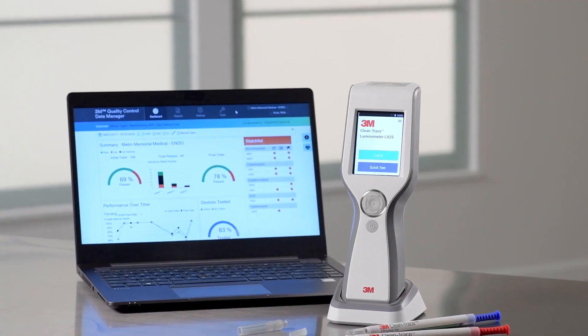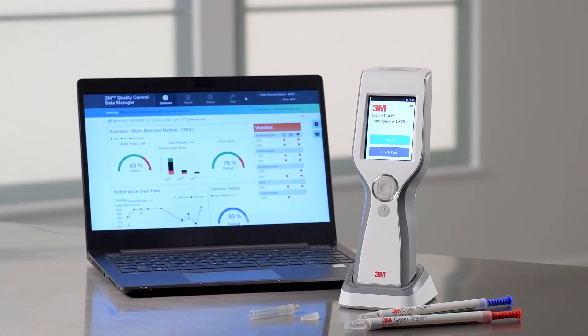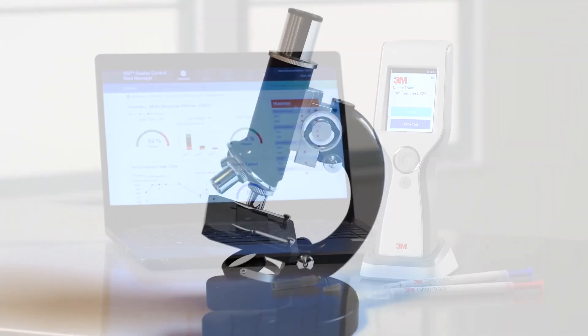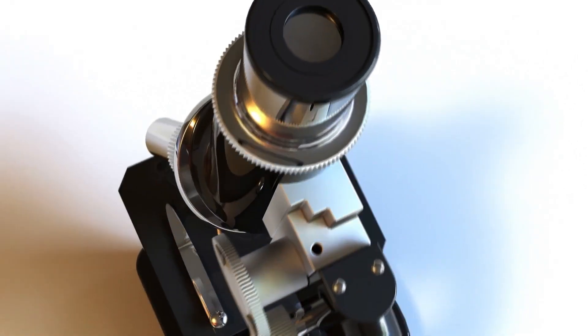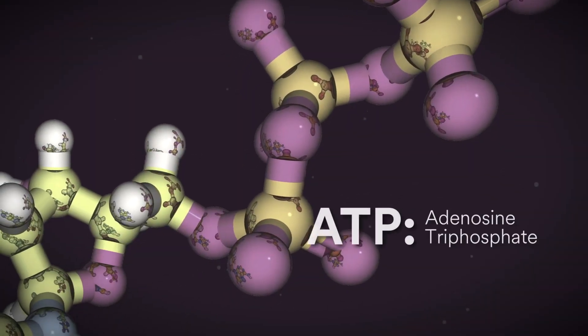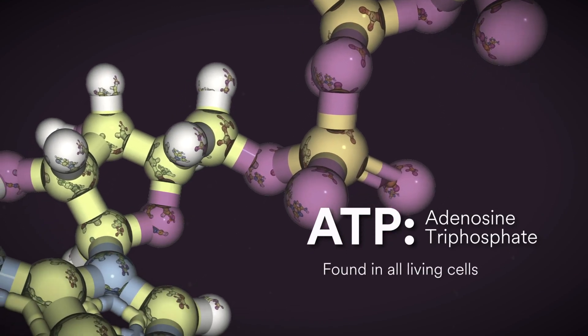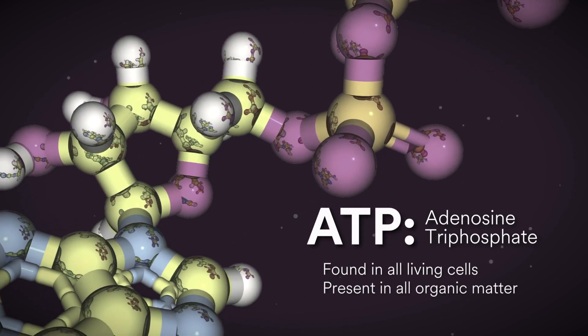The 3M CleanTrace ATP Monitoring System is a reliable and complete cleaning monitoring system. It works by measuring adenosine triphosphate, or ATP. ATP is a molecule that's found in all living cells and is present in all organic matter.